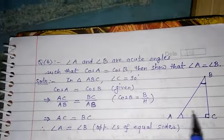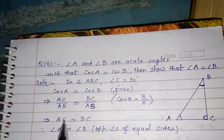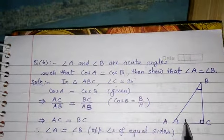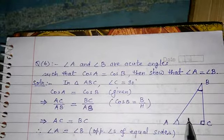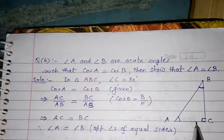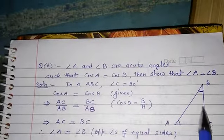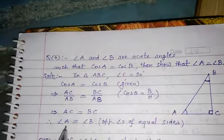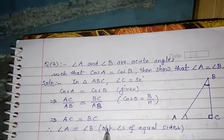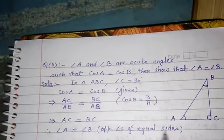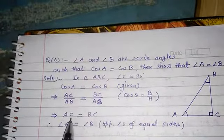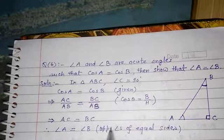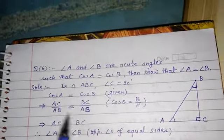In this triangle, two sides AC and BC are equal. By the isosceles triangle property, when two sides are equal, their opposite angles are also equal. The angle opposite AC is angle B, and the angle opposite BC is angle A. Therefore angle A equal to angle B — proved. This is the short solution.